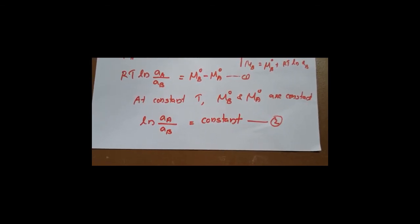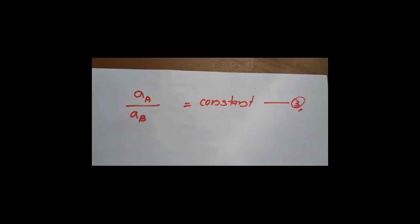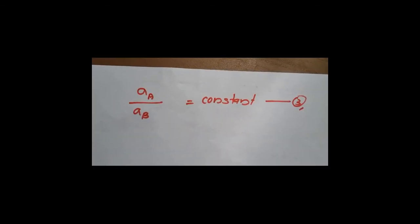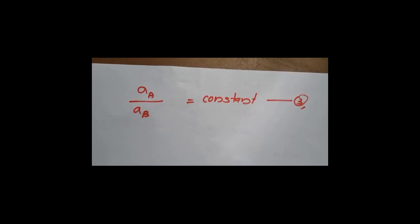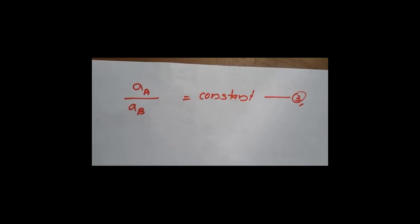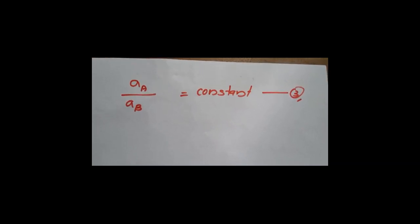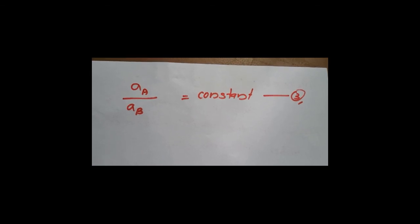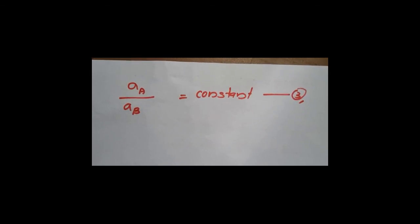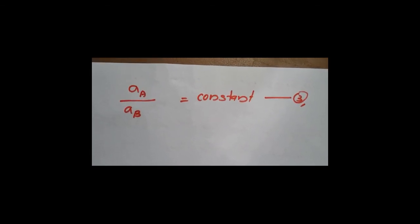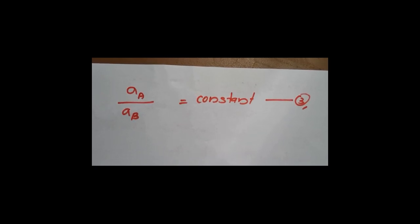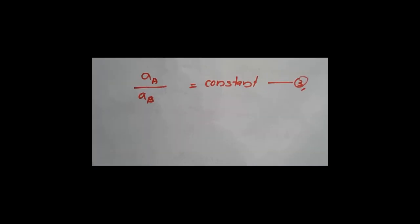This can be rewritten as AA / AB is equal to a constant, that is the ratio of activities AA to AB equals a constant — equation 3.